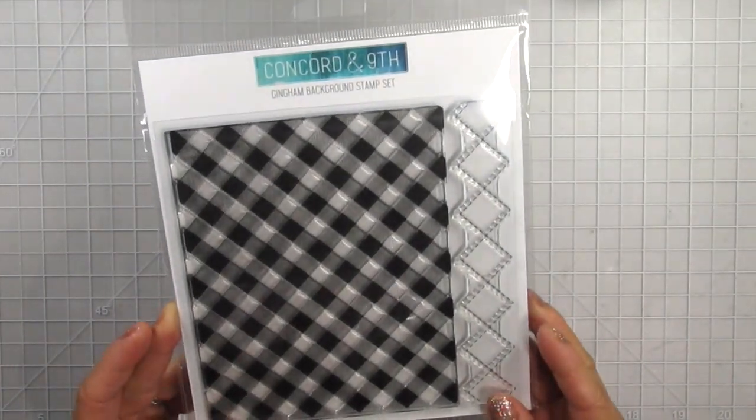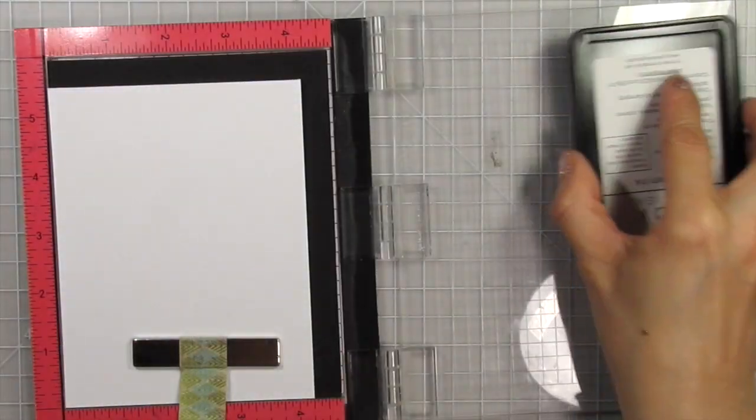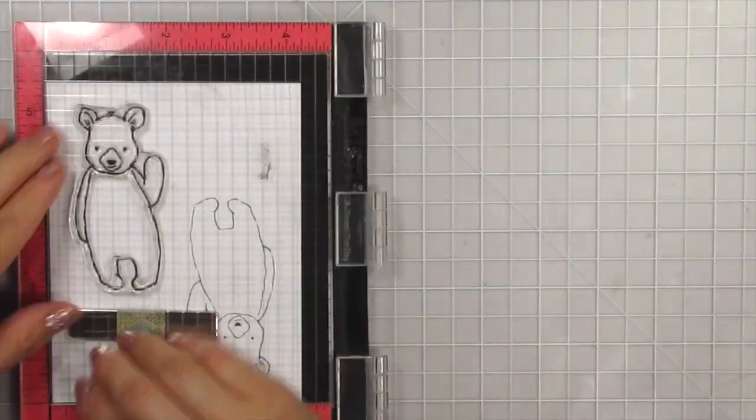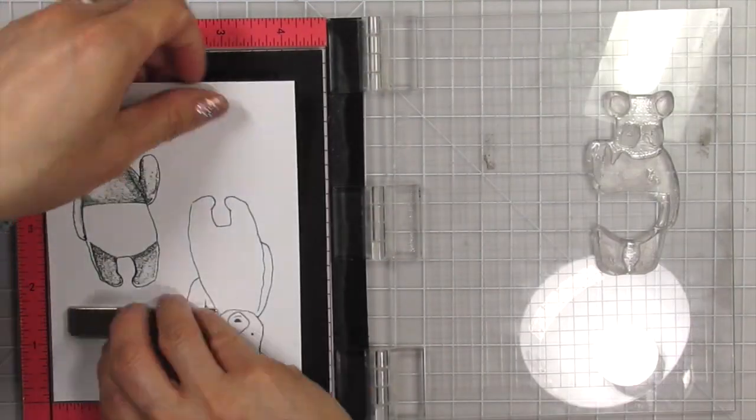I start by stamping two pandas. I use Gina K Designs Obsidian Amalgam Ink to stamp the outlines and then I use Altenew Cloudy Night to stamp the details. I love stamps like this because they're perfect for days when I'm too lazy to color. They also make it quick to put a card together.